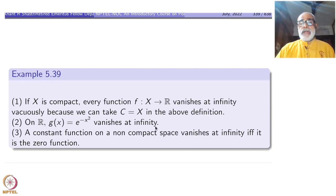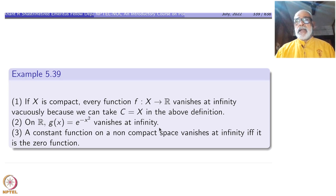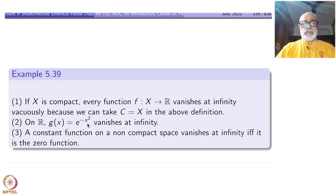On R, look at the function g(x) = e^{-x²}. At x = 0 this is 1, and then it tapers down: as x goes to infinity, this tends to 0. So here is the model — as x goes to infinity, the function tends to 0. We have converted that into an arbitrary topological space by this definition: vanishing at infinity. Outside a compact set, the function becomes less than epsilon, given any epsilon, by choosing an appropriate compact set.